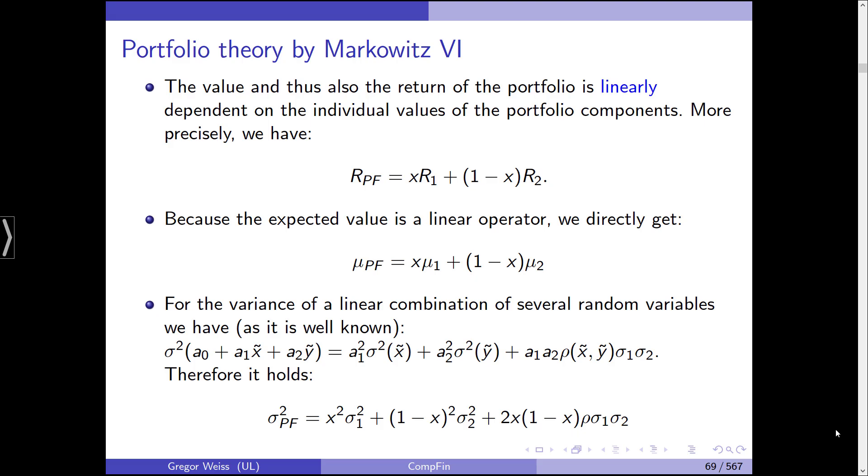Thus, in the last line, we have the variance on the portfolio return given by the weight X squared times sigma 1 squared plus 1 minus X squared times sigma 2 squared plus 2X, 1 minus X, rho, sigma 1, sigma 2. And you could also substitute the last part using the covariance.